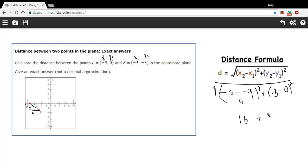So we've got 16 plus 9. And 16 plus 9 is 25. So our answer is going to be the square root of 25, which is just 5.